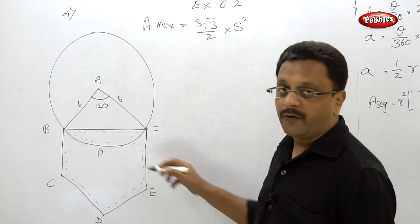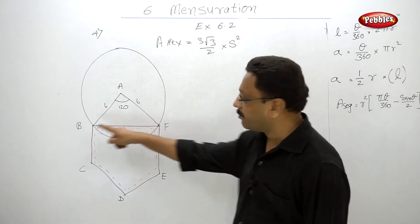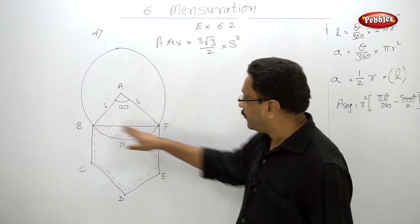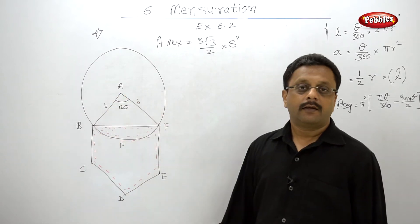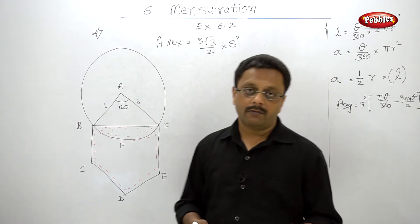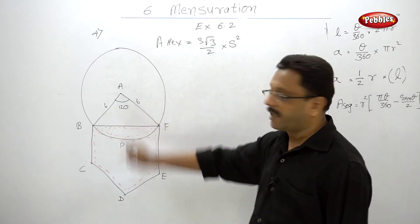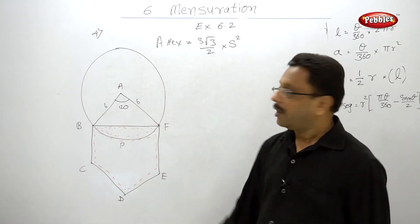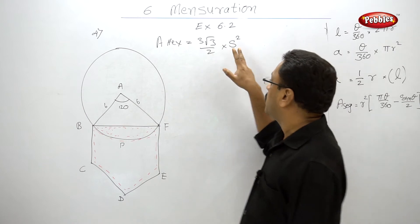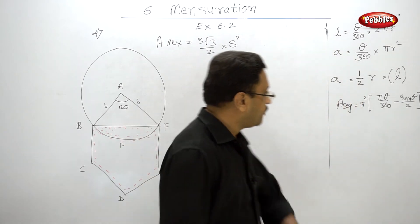They have asked us to find the area of segment BPF and the area of the shaded portion. The shaded portion means: find the area of the complete hexagon and subtract the area of the triangle to get the complete shaded area. So we need the area of the hexagon, the area of the segment, and the area of the triangle. The hexagon area is found by the formula (3√3/2) × side².